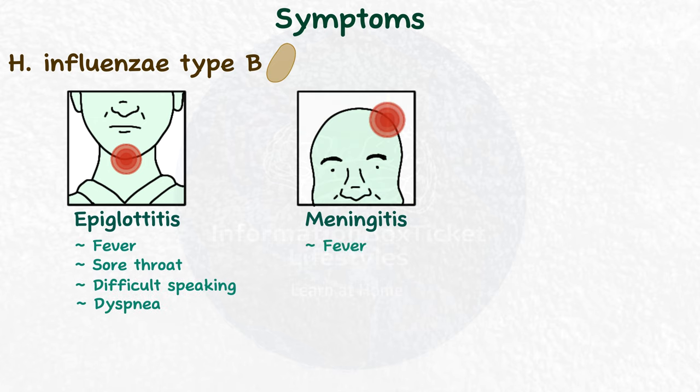For illnesses produced by non-typable Haemophilus influenzae: otitis media is associated with fever, ear discomfort, and otorrhea, which is discharge from the ear. Sinusitis symptoms include fever, pain around the affected sinus, and persistent purulent nasal discharge. Bronchopneumonia symptoms include fever, chills, chest discomfort, coughing, and shortness of breath. Finally, conjunctivitis causes redness, discomfort, and burning in the eye.